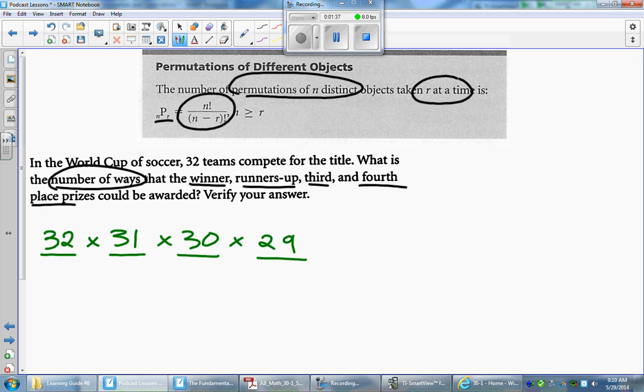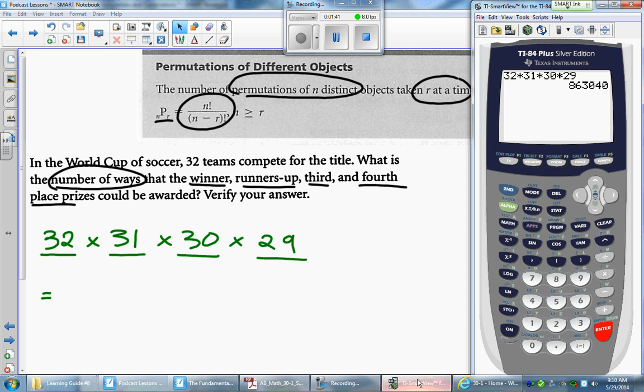Okay, so if you use a fundamental counting principle, we need to multiply all these numbers together to get the total number of arrangements here. So I'm going to go ahead and do that here. We go 32 times 31 times 30 times 29, and that's going to give you a number, 863,040.